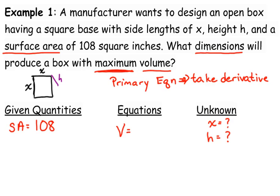Volume, that's what we're going to take the derivative of, so we need to come up with an expression for that. What would be the volume of this box? x squared times h. The volume of any prism is the area of the base times the height. So the volume here is x squared times h.